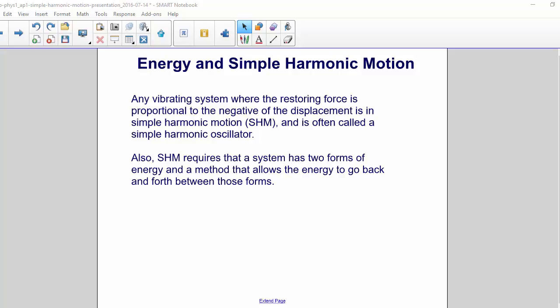Energy and simple harmonic motion. Any vibrating system where the restoring force is proportional to the negative of the displacement is in simple harmonic motion and is often called a simple harmonic oscillator. Also, simple harmonic motion requires that a system has two forms of energy and a method that allows the energy to go back and forth between those forms.